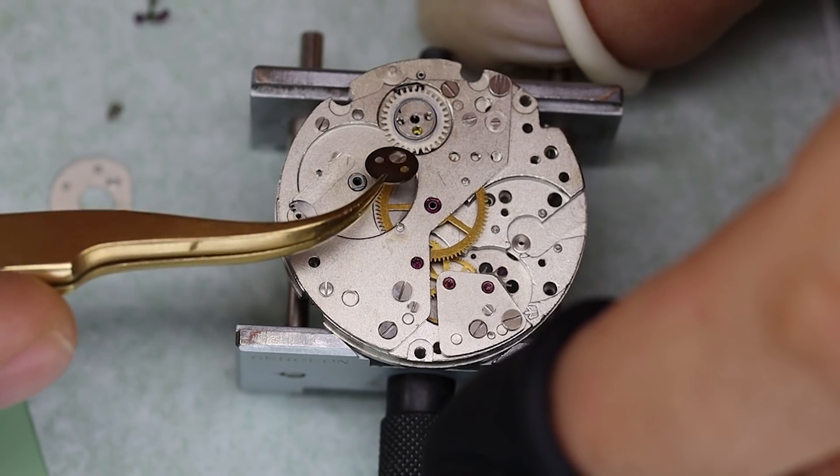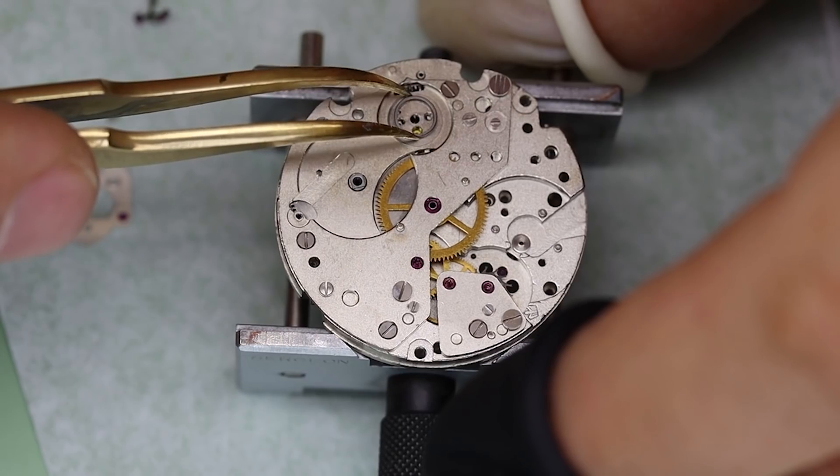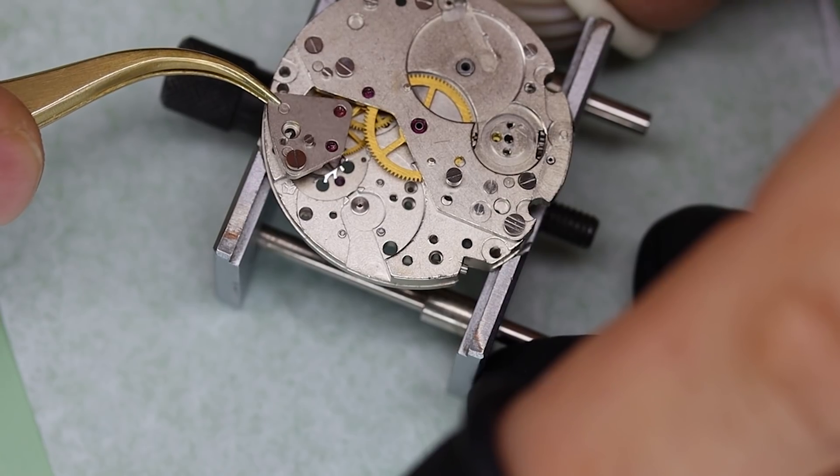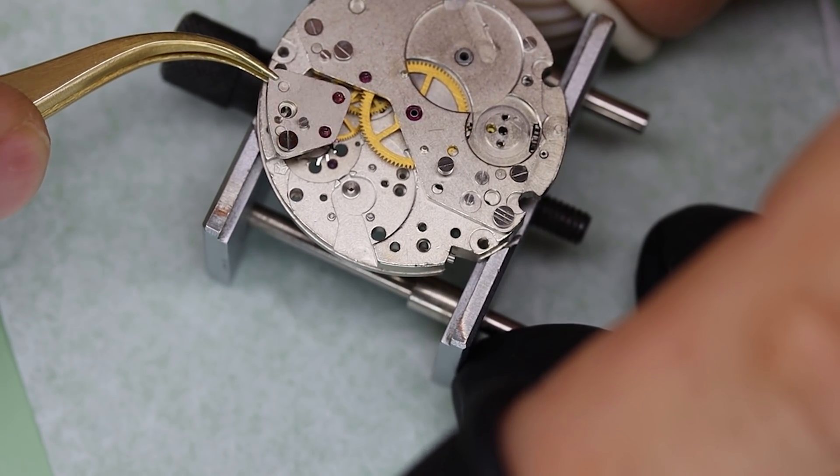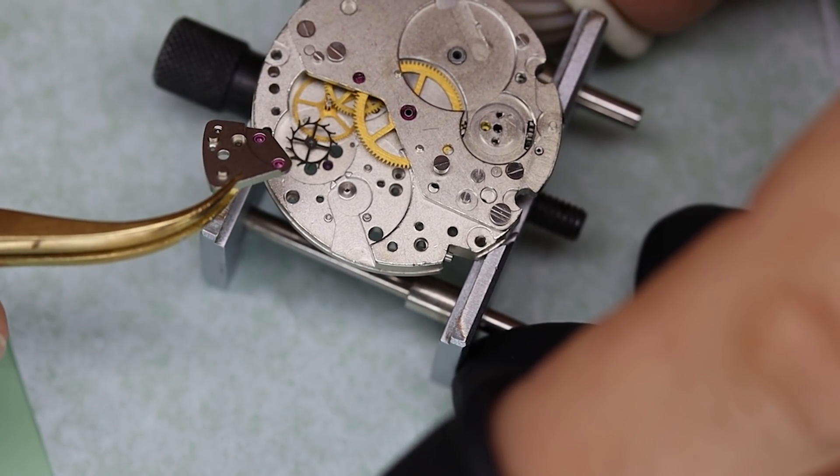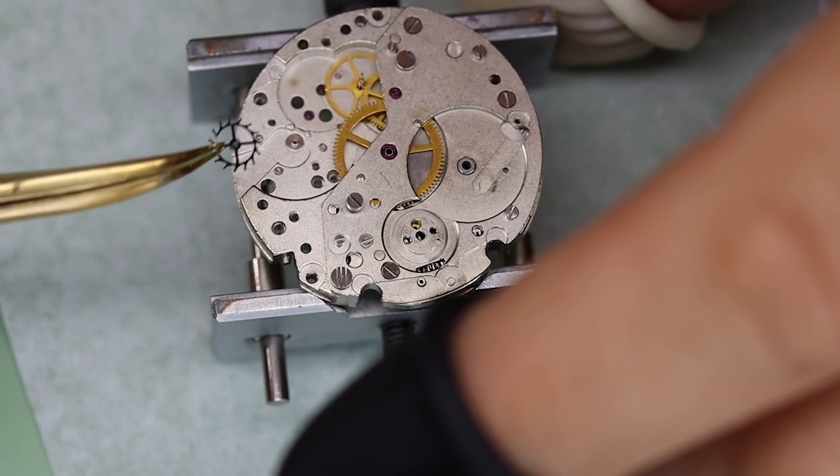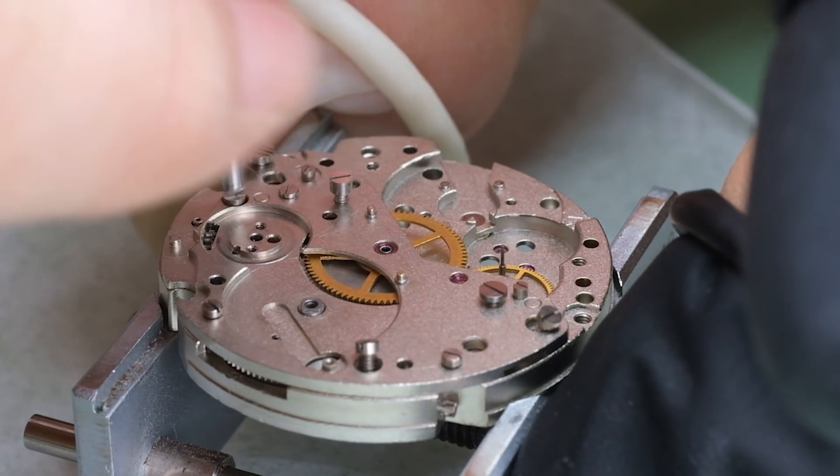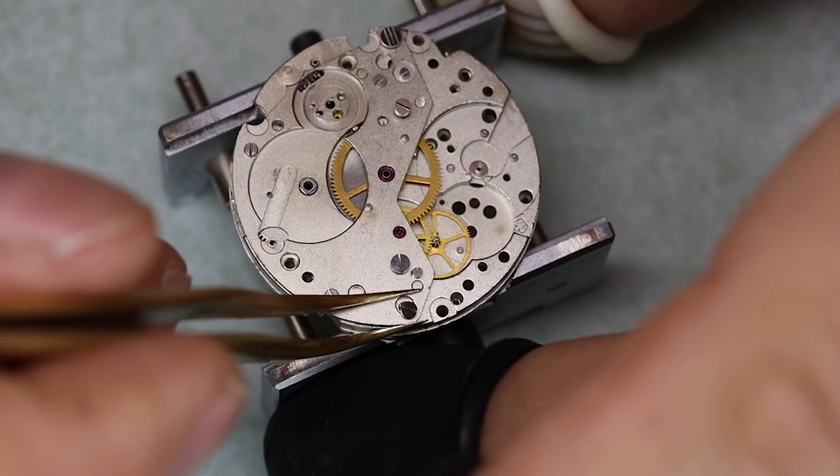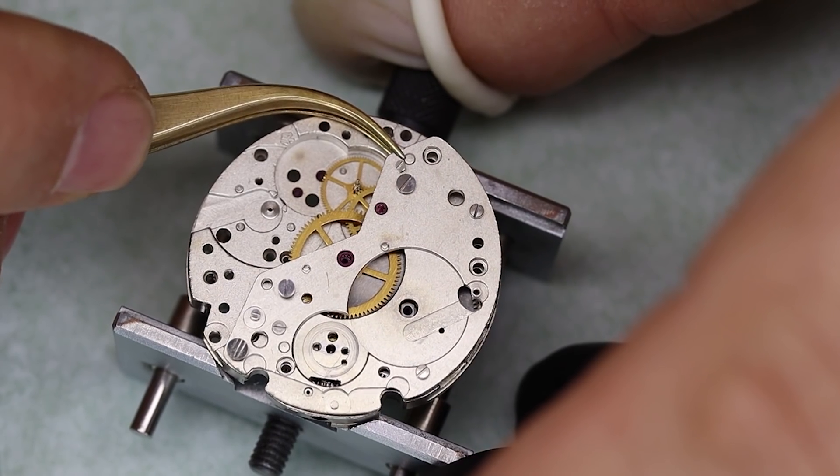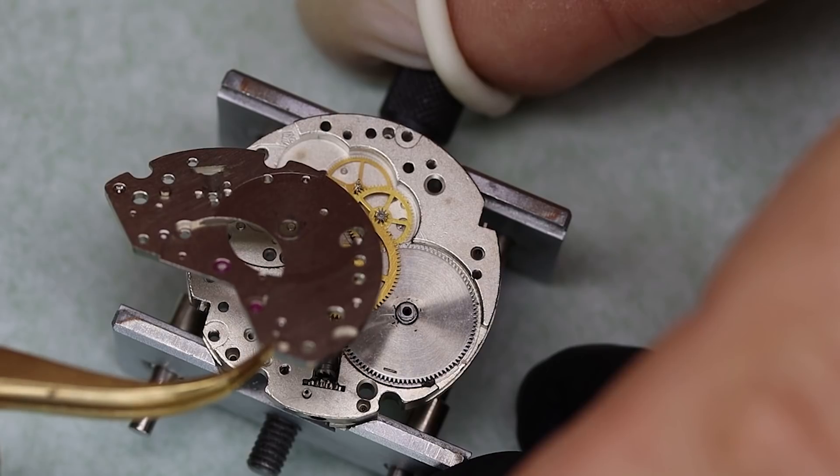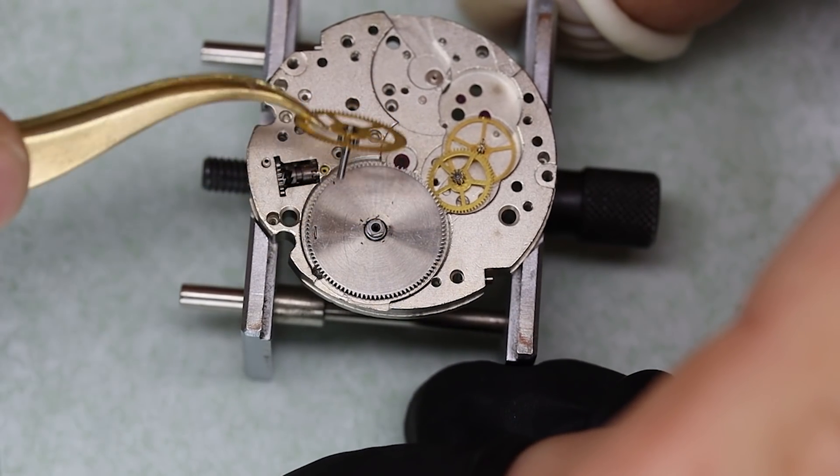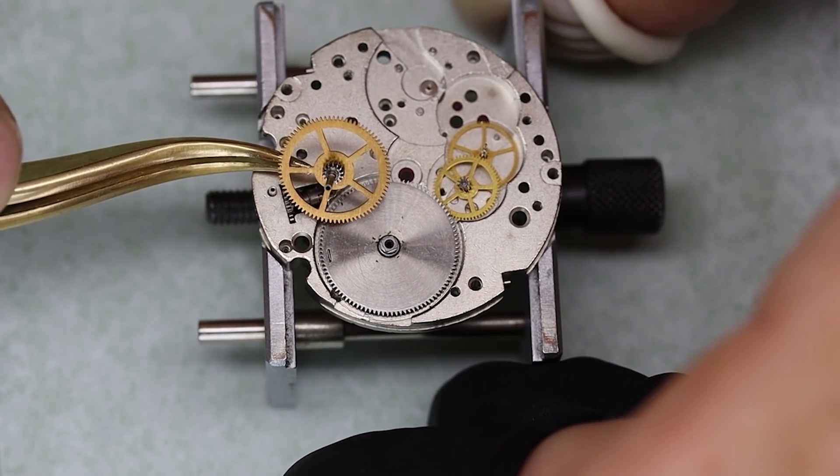So the story goes that the Poljot 3133 is basically the same movement as the Valjoux 7734, and that the Soviets bought up the equipment from Valjoux. But they are not at all identical. It seems the 3133 has had a little bit too much borscht, or maybe vodka even. It's at least grown quite a lot over the 7734, about a centimeter thicker.